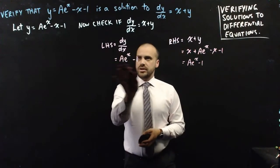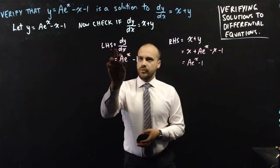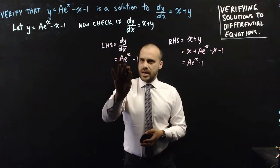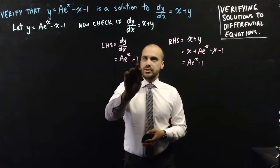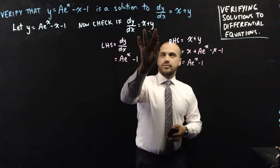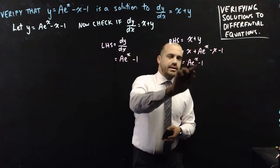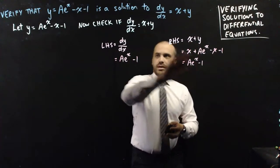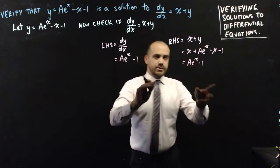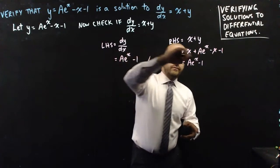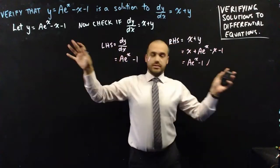Left-hand side: the derivative of y with respect to x is ae to the x minus 1. Right-hand side: x plus y is equal to ae to the x minus 1. The left-hand side equals the right-hand side — verified.